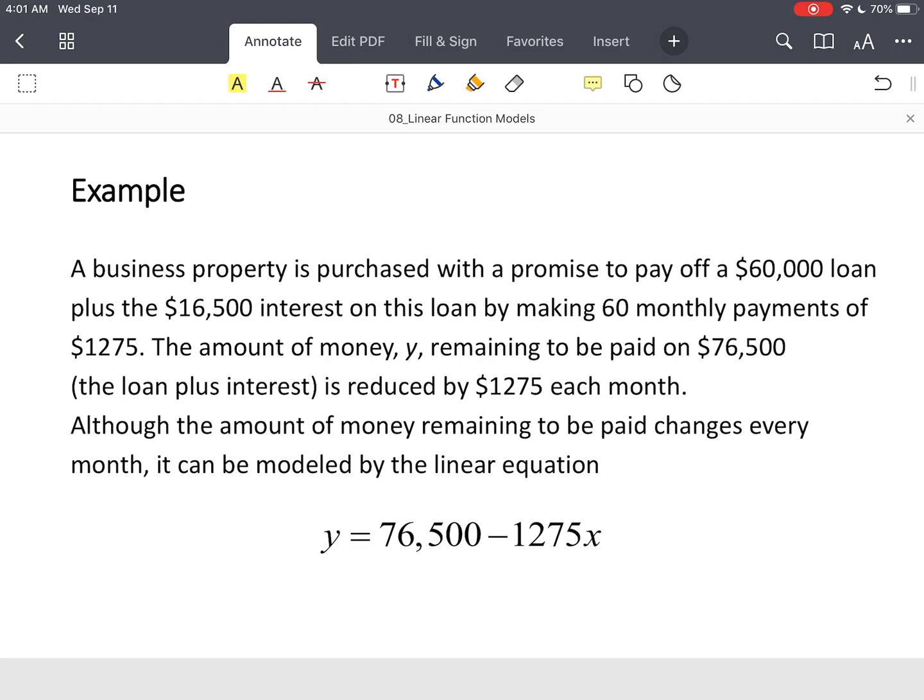So now we have a property that was purchased for $60,000 with a promise to pay $16,500 in interest over a 60-month period or a 5-year period. Now, your remaining balance of that $76,500, you're going to reduce your loan by $1,275 each month.